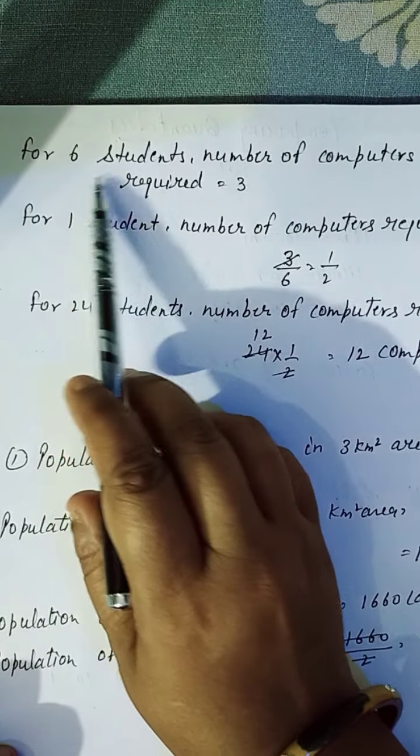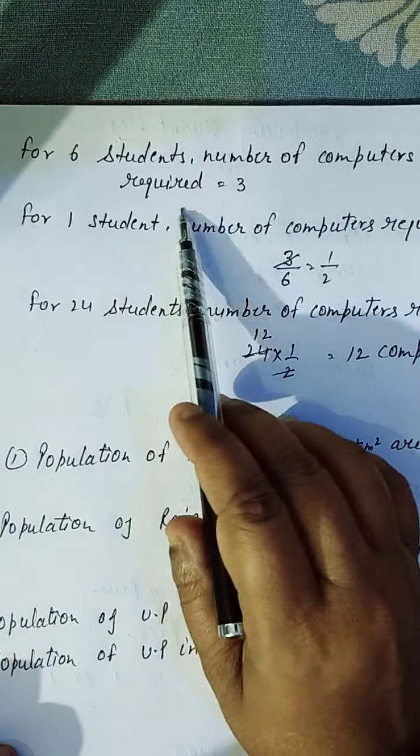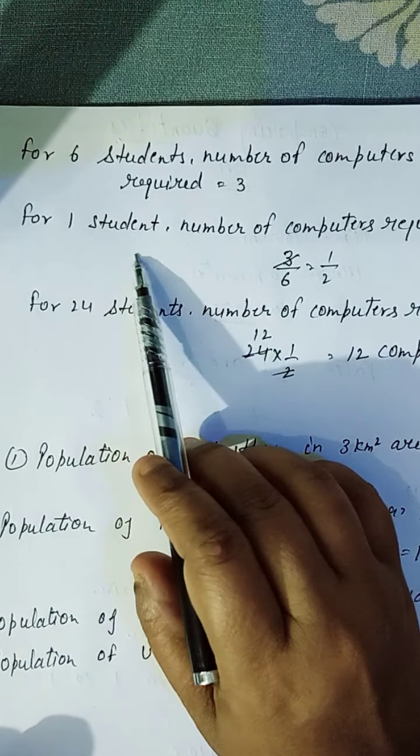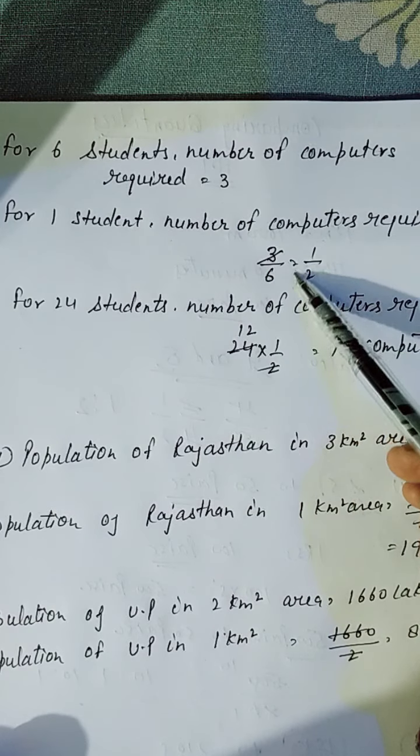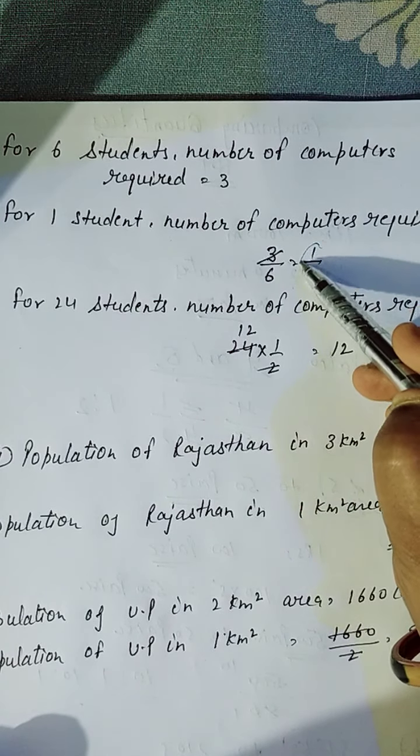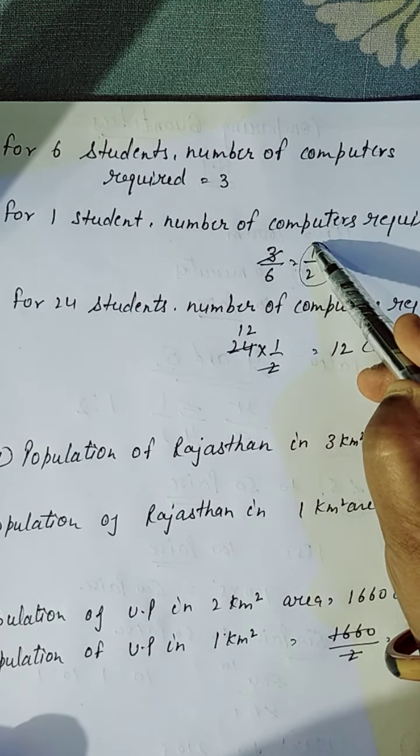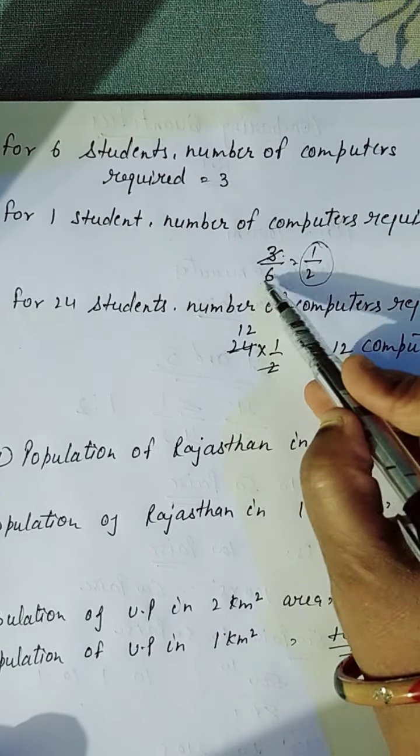So, for six students, number of computers required three. So, one ke liye nikalna hoon. Tum kya karte hai? Divide karte hai. Then, three by six. Kitne computer aa raha hai? One by two. Three by one, three twos are six.